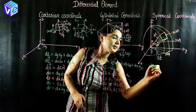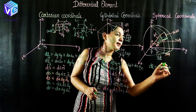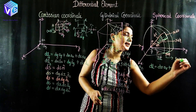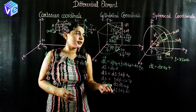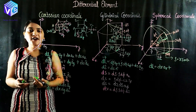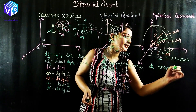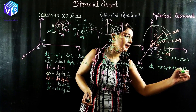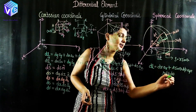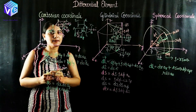Differential displacement dl in spherical coordinates is: dr in the direction of a-r, plus rho·d-phi in the direction of a-phi, plus r·d-theta in the direction of a-theta. Since rho = r·sin(theta) — a relationship proved in the previous video on spherical coordinates — this becomes: dl = dr·ar + r·sin(theta)·d-phi·a-phi + r·d-theta·a-theta.